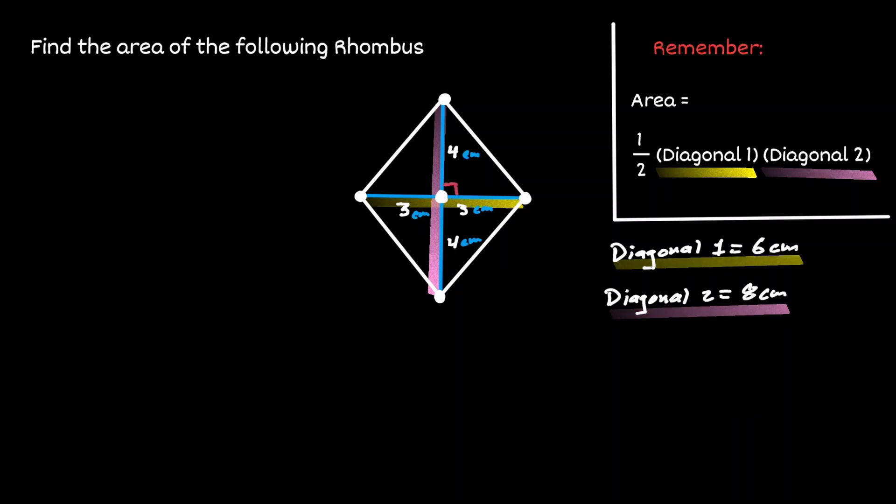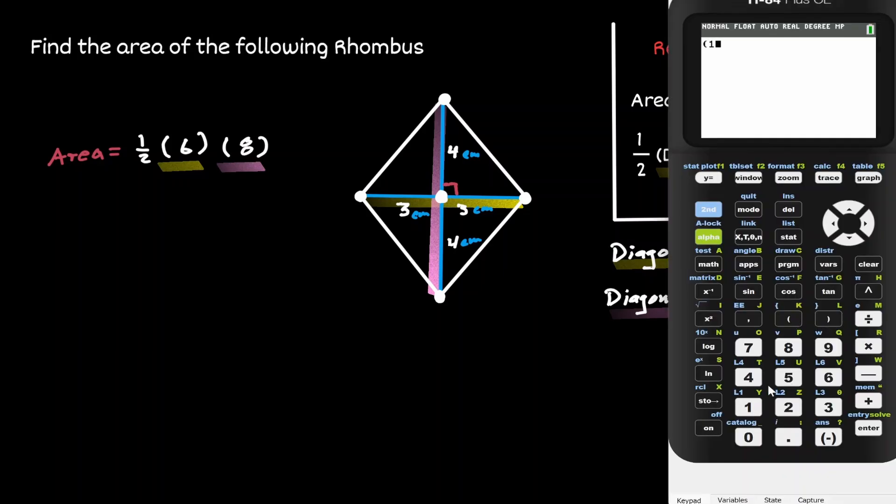So now we have everything that is needed to find the area of this rhombus. It is equivalent to one half times the length of the first diagonal, which we found it to be 6, times the length of the second diagonal, which we found it to be 8. So now it's just a matter of multiplying this. That will be equal to 24 centimeters squared.